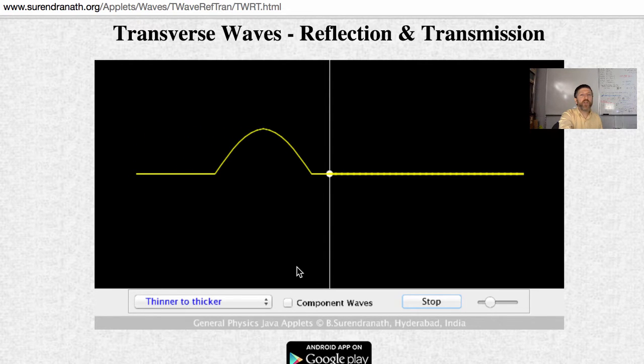Now I do want you to notice a couple of things besides the reflection here while we have this on our screen. What happens to the wave speed when it goes to the heavier spring? Notice it slows down, and the slower speed, the change in medium—that's the only way you can change the speed—also changes the wavelength.